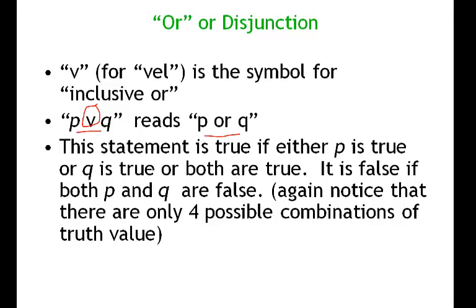There are only four possible combinations of truth values. For 'Bill was from Arkansas or Hillary was from Arkansas': first, both true; second, Bill true and Hillary false; third, Bill false and Hillary true; fourth, both false. We can organize these into a table — we call this the truth table. It lists all possible combinations of truth and falsity for a statement.